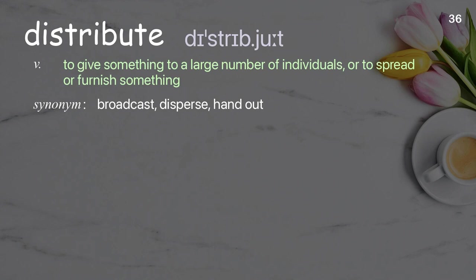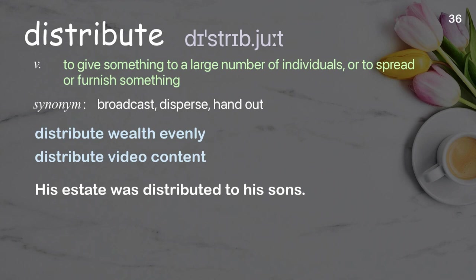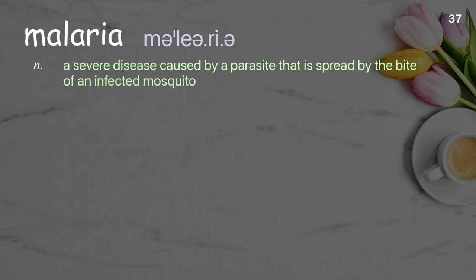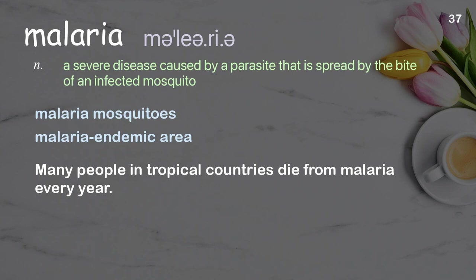Distribute: to give something to a large number of individuals, or to spread or furnish something. Examples: distribute wealth evenly, distribute video content. His estate was distributed to his sons. Malaria: a severe disease caused by a parasite that is spread by the bite of an infected mosquito. Examples: malaria mosquitoes, malaria endemic area. Many people in tropical countries die from malaria every year.